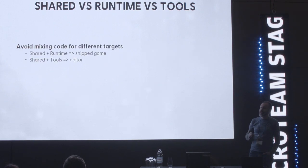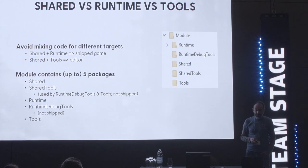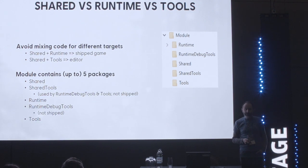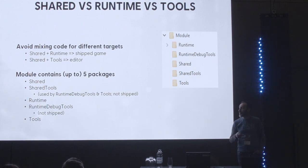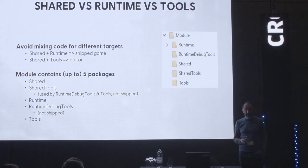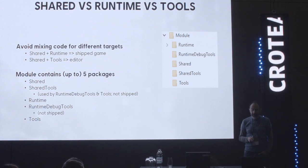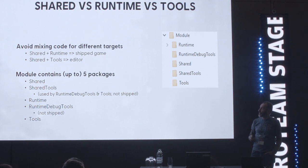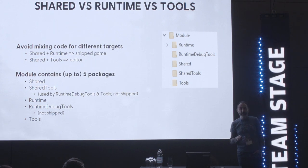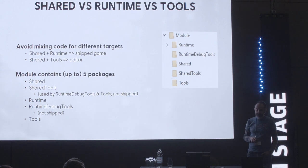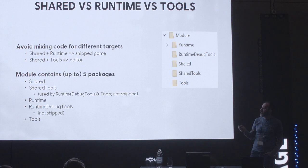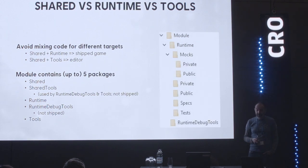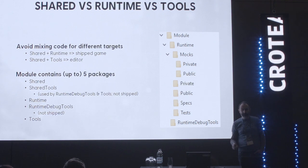Our separation is just a little bit more elaborated. We added a short runtime debug tools category, which contains debug code used during development but which should not be shipped in the final game. And we added shared tools, containing code shared between tools and the runtime debug tools. So to express the modularity in our code, we define a module as a group of up to five packages: shared package, shared tools package, runtime, runtime debug tools, and tools. Each package is defined as discussed, containing the public folder, private, and other folders.